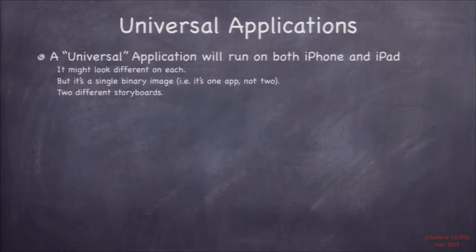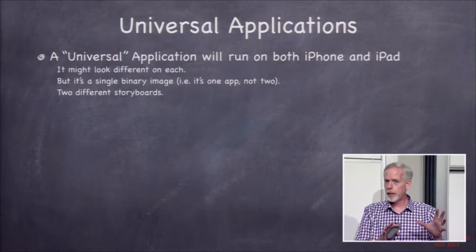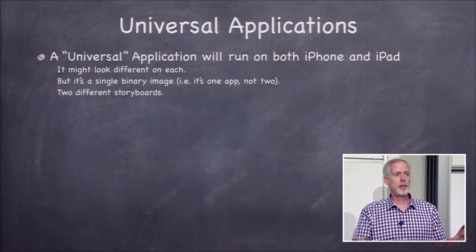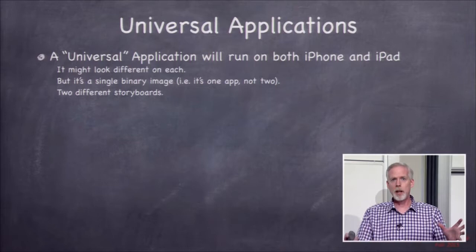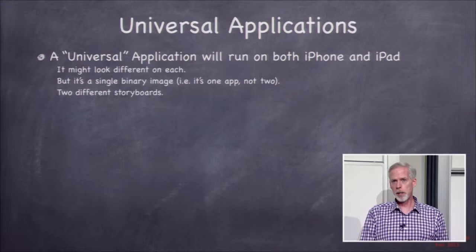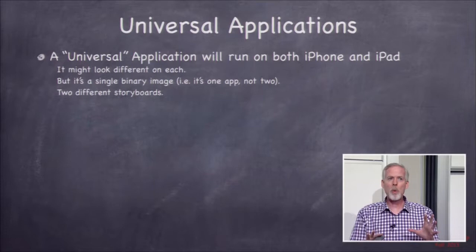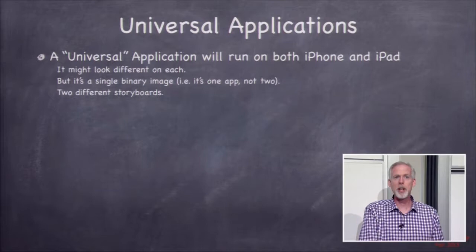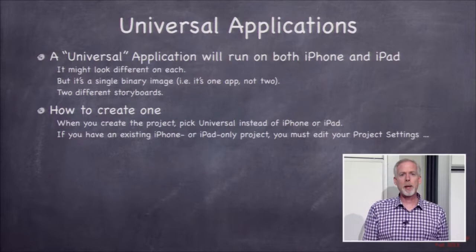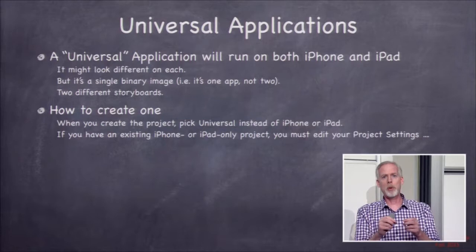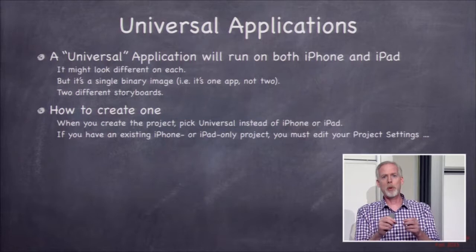A universal application is a single app that runs on both iPhone and iPad, and we achieve this with two separate storyboards. When creating a new project, choose 'Universal' as the platform. For an existing app, change the devices setting from iPhone to Universal in project settings under the General tab's Deployment Info. When prompted to copy the existing storyboard, I recommend saying don't copy — instead create a new iPad storyboard via New File under User Interface.